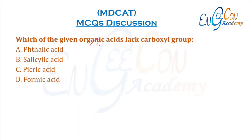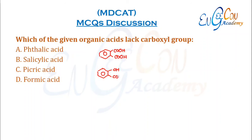Which of the given organic compounds lacks a carbonyl/carboxyl group? Phthalic acid is a dicarboxylic acid, so it contains a carboxyl group. Salicylic acid contains an OH group and a COOH group, so it also has a carboxyl group. Picric acid is 2,4,6-trinitrophenol — it is a phenol and lacks a carboxyl group, so this is the correct answer.